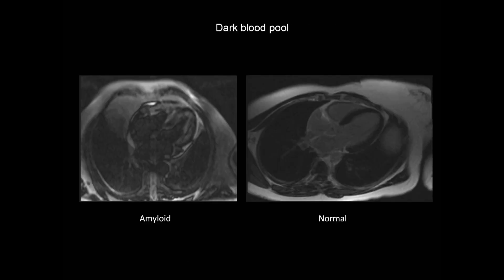One other characteristic feature seen with cardiac amyloidosis on late gadolinium enhancement imaging is a dark blood pool. In most patients, when we undertake late gadolinium enhancement imaging, the myocardium is very dark but the blood pool is generally relatively bright — this is a normal patient with a relatively bright blood pool. But with cardiac amyloid, we see diffuse deposition of amyloid in the myocardium and a notably dark blood pool.